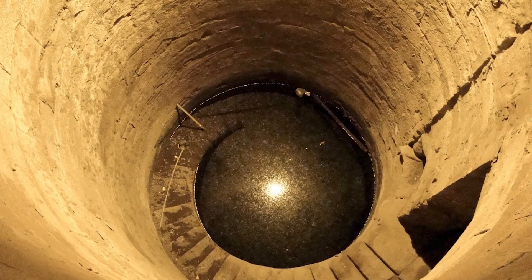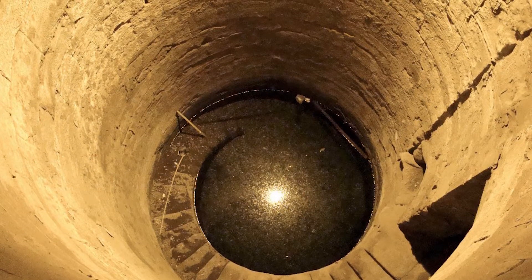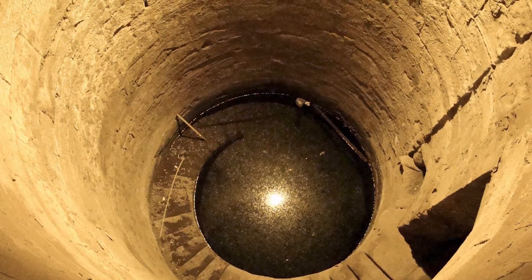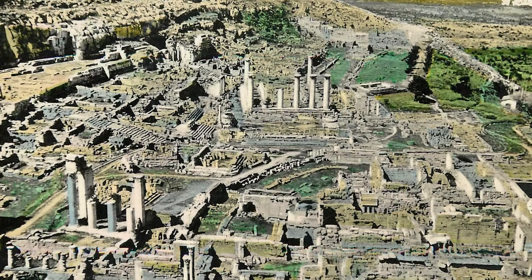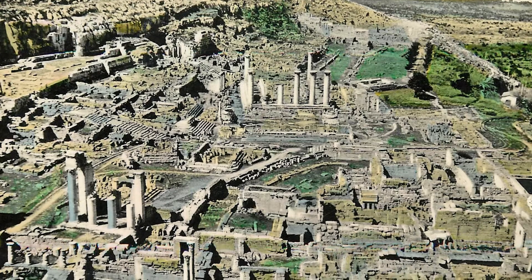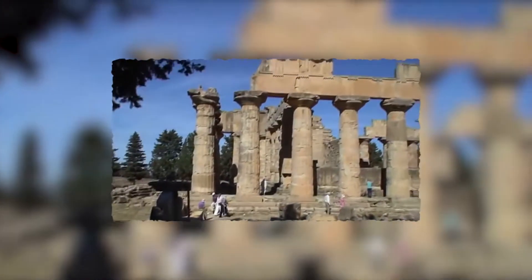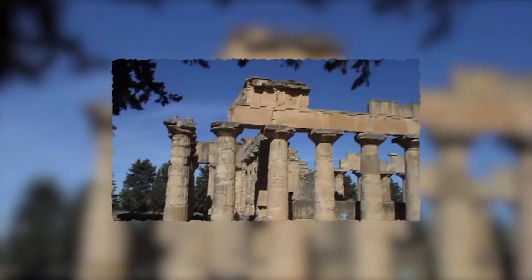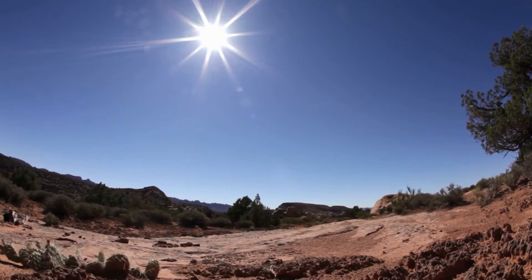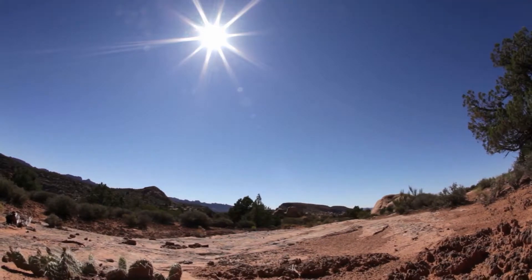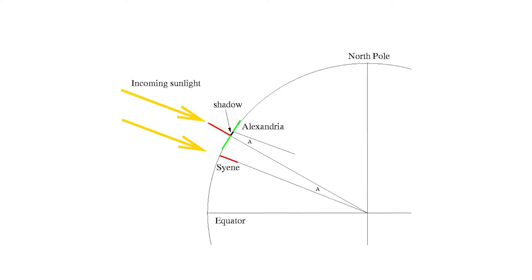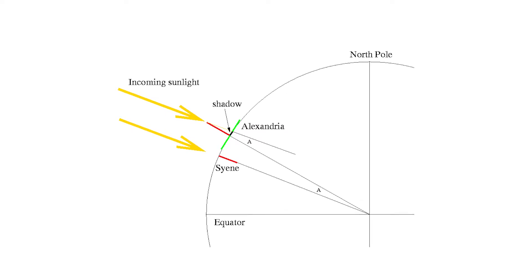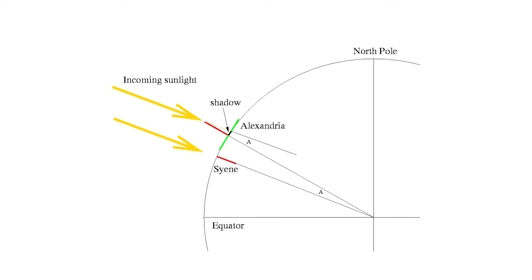Knowing that the bottom of a well in the southern Egyptian city of Syene — not to be confused with Cyrene, which is near the modern Libyan city of Benghazi — would be illuminated by the sun twice a year, Eratosthenes measured the angle the sunlight hit a well in Alexandria at the same time.